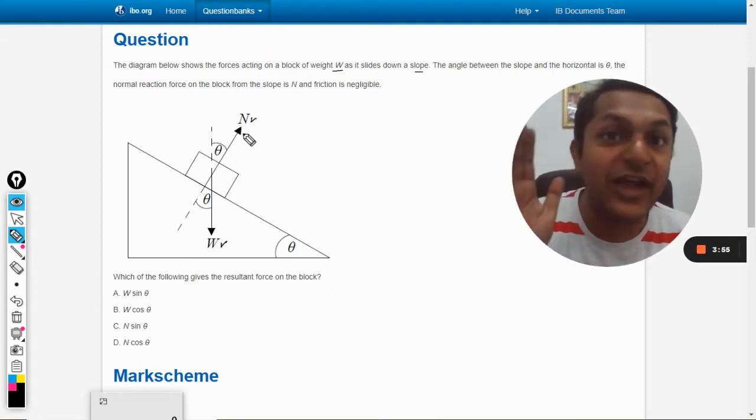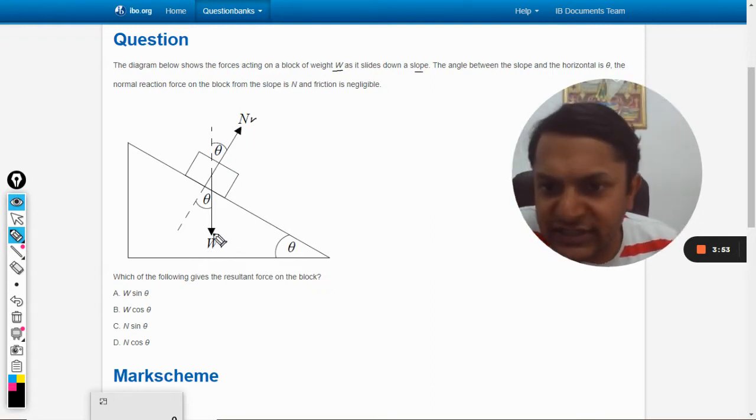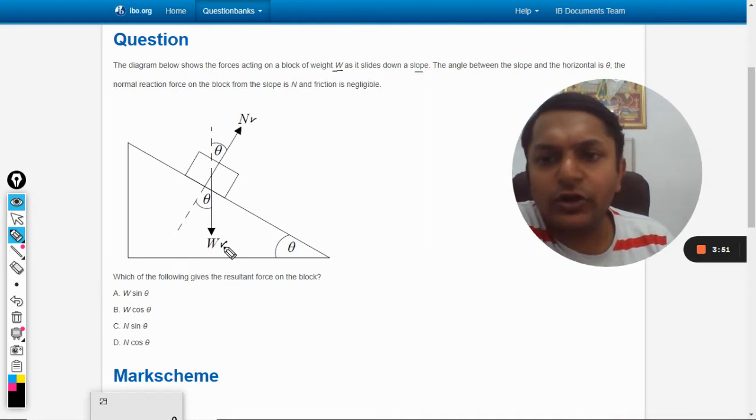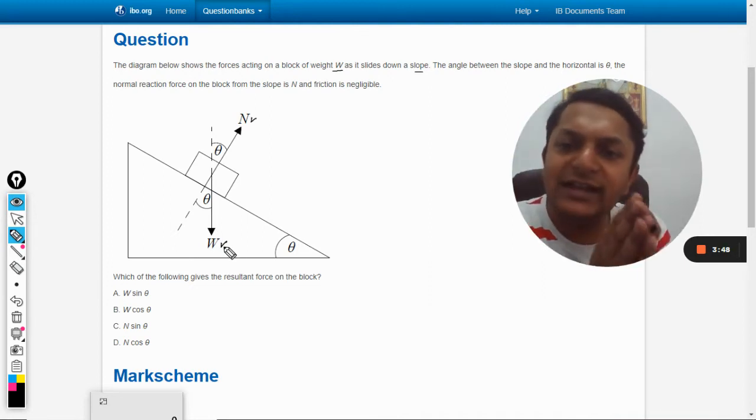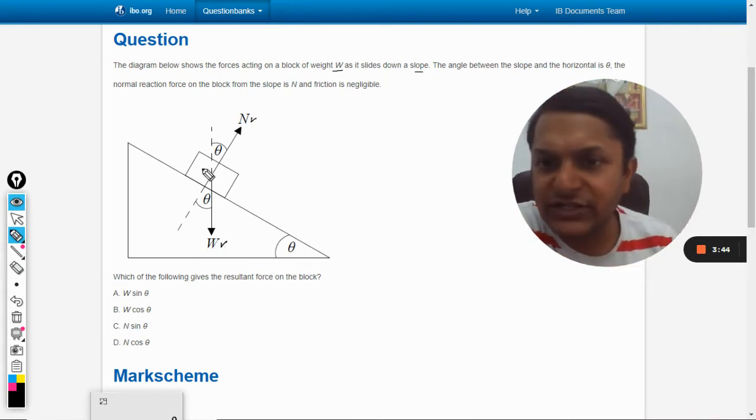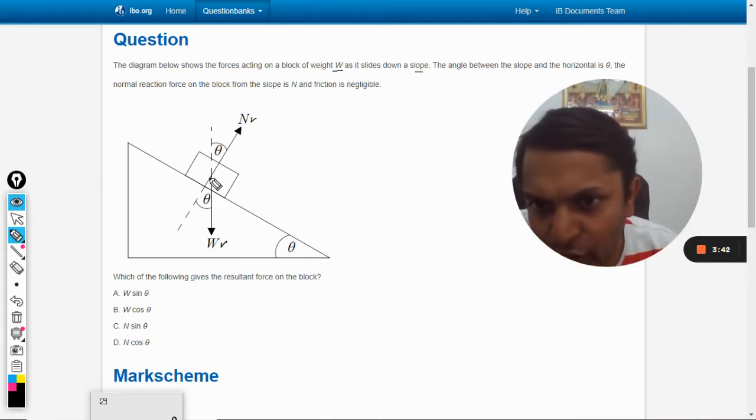So this normal is a reaction. Okay, so this is the weight. So what we are going to do is we are going to divide the force that is weight into two rectangular components. One will be along this, like this.